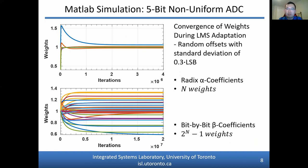To demonstrate the effectiveness of these calibration techniques, a 5-bit ADC is generated in MATLAB. This ADC has its quantization levels varied randomly with a Gaussian distribution having a standard deviation of 0.3 times a nominal LSB. The two figures show the convergence of weights during the LMS adaptation algorithm. Since the ADC is 5 bits, there are 5 alpha coefficients for radix calibration and 31 beta coefficients for bit-by-bit calibration. The alpha and beta coefficients all converge to values scattered around 1, because ideally they all should be 1. Notice that the number of iterations required for convergence increases with bit-by-bit calibration compared to radix calibration.